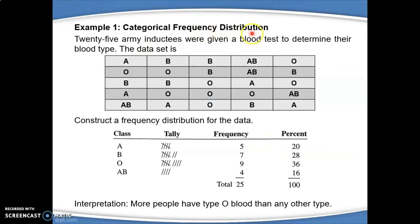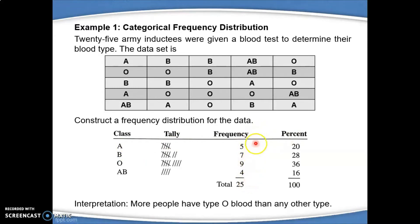For categorical frequency distribution, we refer to this example. We have a data set based on blood type. The blood type consists of 4 types, meaning you need to make a class of 4: A, B, O, and AB. To find the frequency for every class, you use the tally method to get the correct numbers. Using the frequency, you can also calculate the percentage for every class, and interpret the table by focusing on the majority.